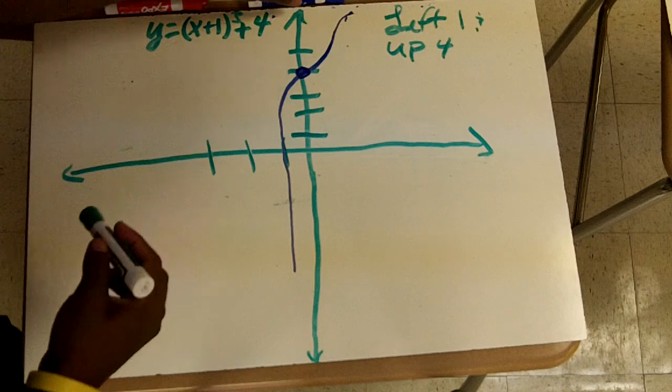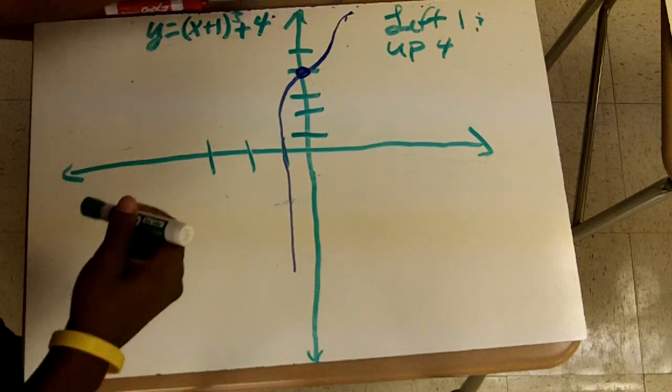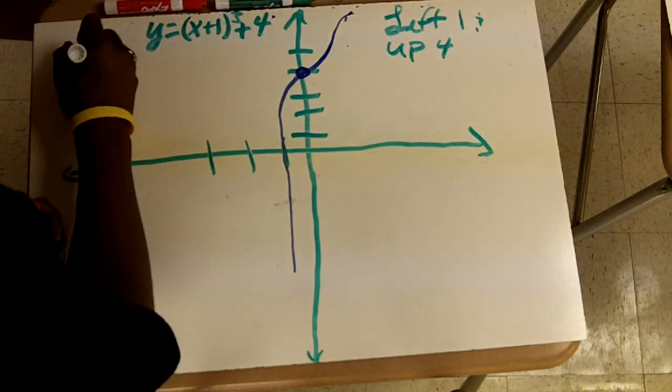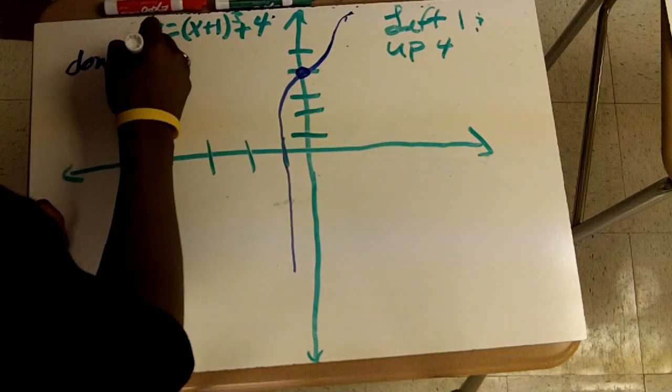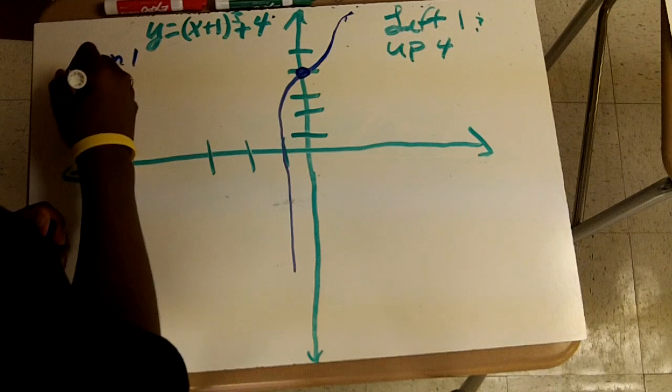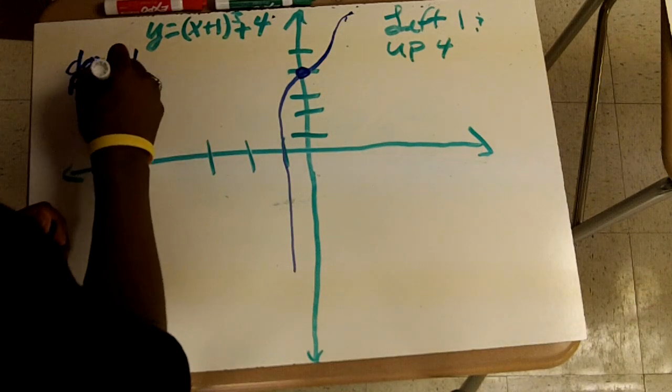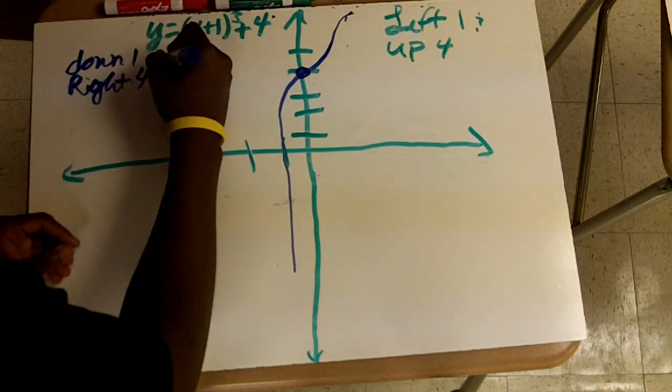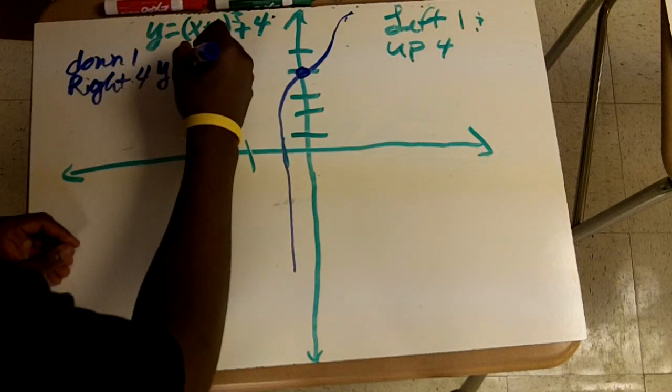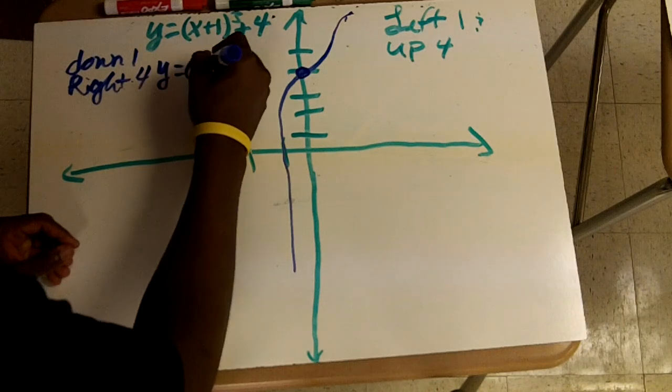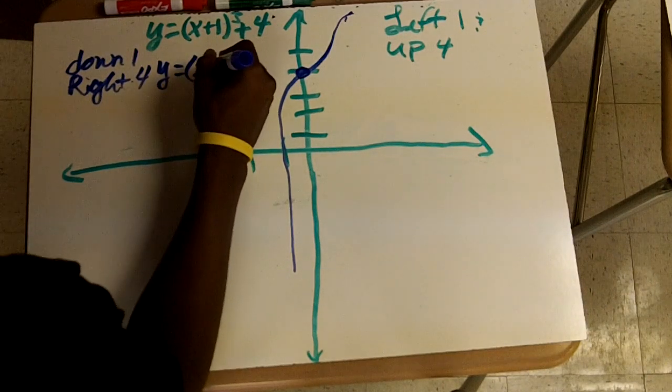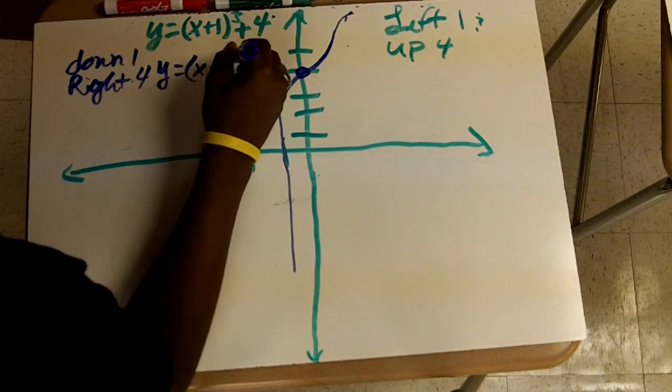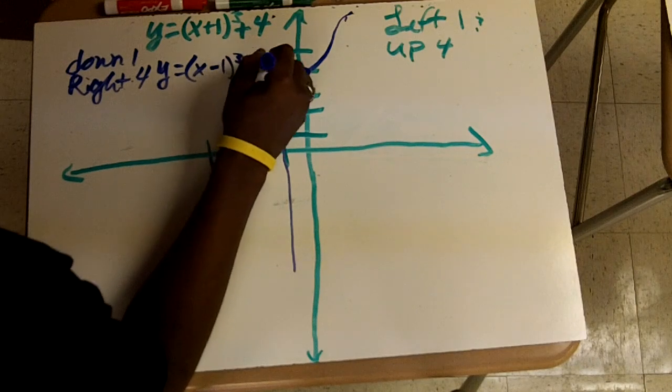Now if I want to, say I want to move it down one and to the right four, then your equation will look like x minus one cubed minus four.